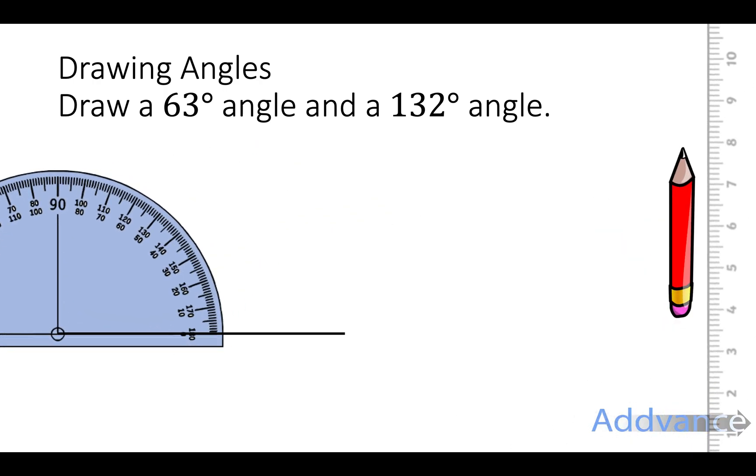Then we take our protractor and put our protractor bullseye directly over the end of the line. And then we look for 63 and 63 is over here. So we count up from 0, 10, 20,